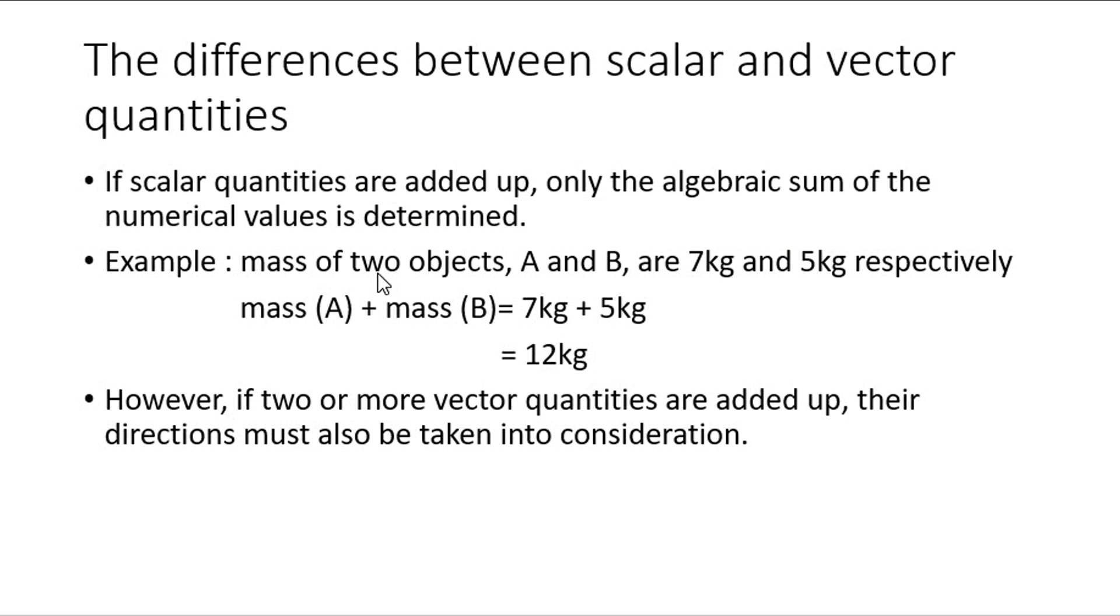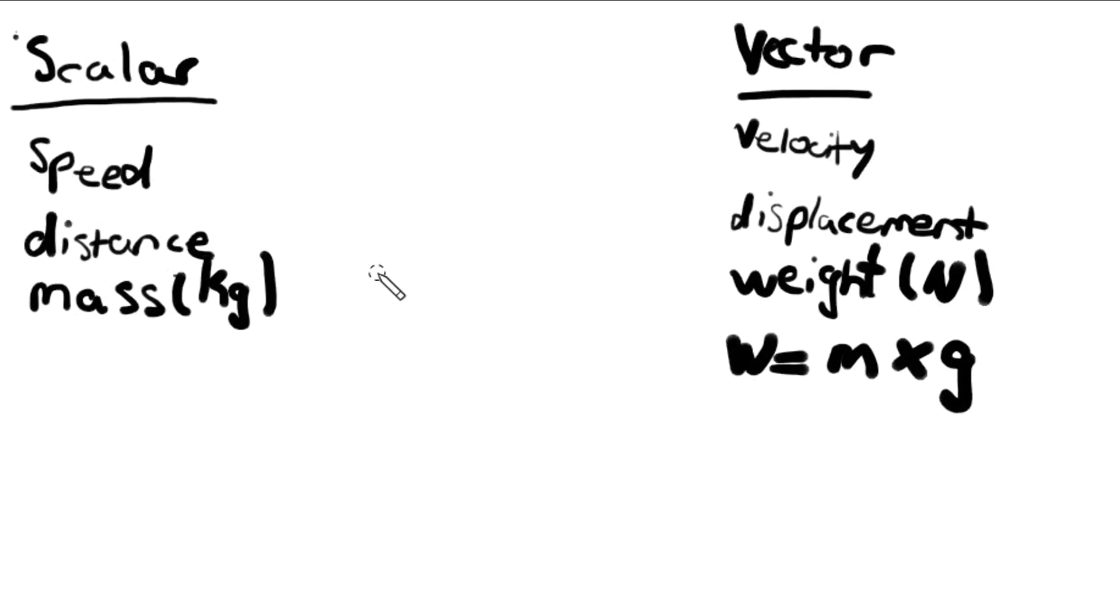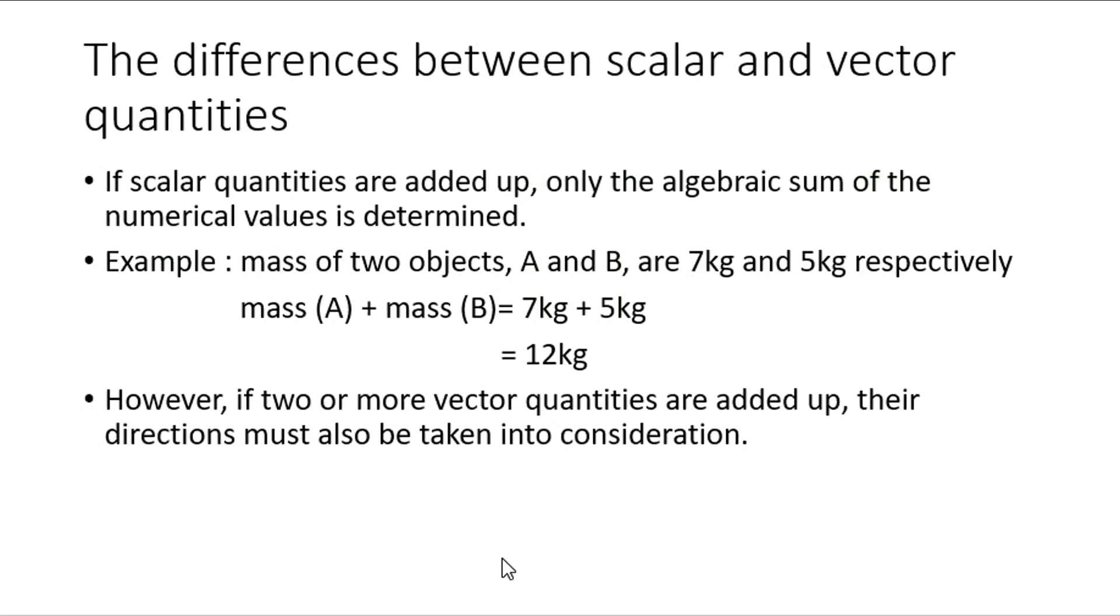The difference between scalar and vector quantities. For the purposes of calculation questions, scalar quantities, if they are added up, only the algebraic sum of the numerical values is determined. Just like a normal sum, if you had 7 apples plus 8 apples, you'd get an answer of 15 apples. Same way with scalar quantities. In the example mentioned here in this slide, the mass of two objects, A and B, are 7 kilograms and 5 kilograms respectively. We just add their masses, and we get an answer of 12 kilograms.